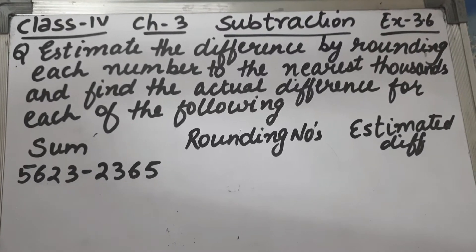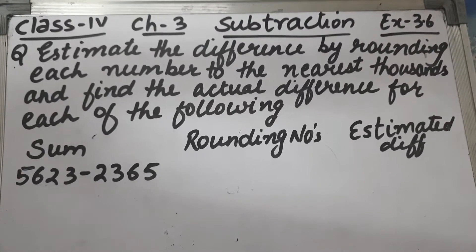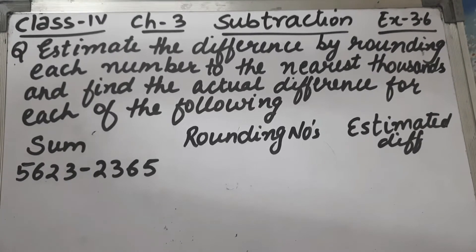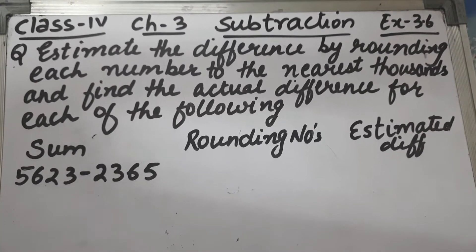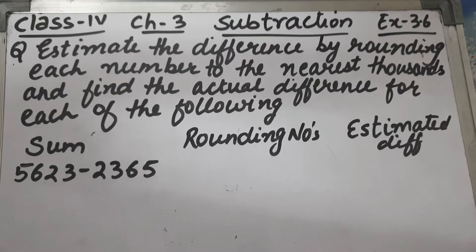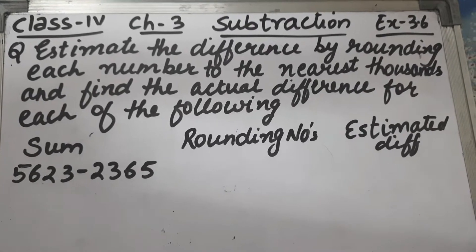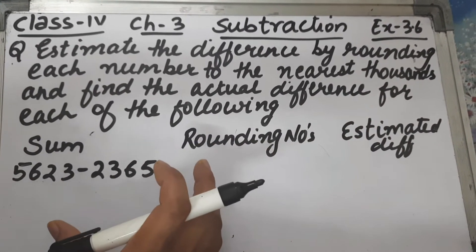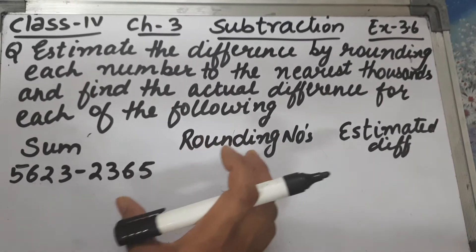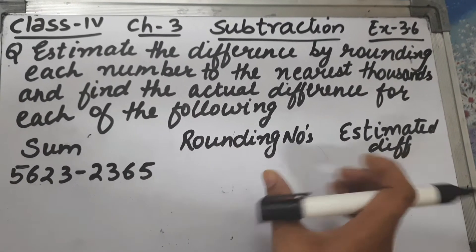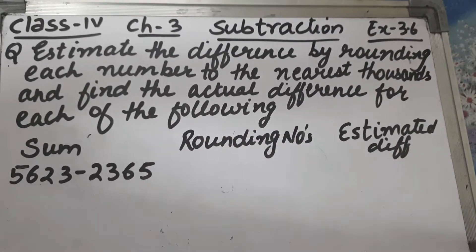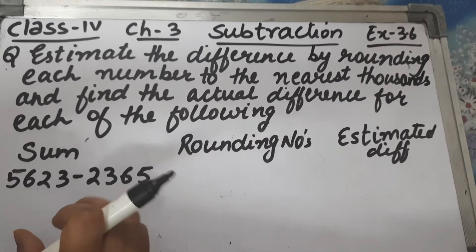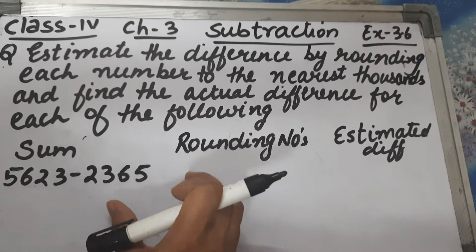Hello everyone, I am Prabhjit Kaur and today we will start exercise 3.6. The question is to estimate the difference by rounding each number to the nearest thousands and find the actual difference for each of the following. We have to estimate the difference to the nearest thousand and also find the actual difference.